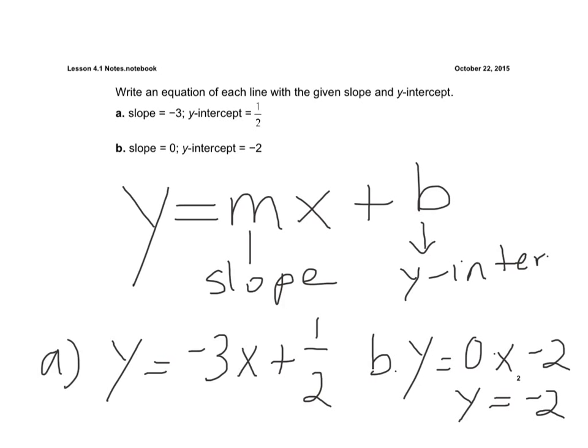So again, pretty simple to write an equation in slope-intercept form if you're given the slope and you're given the y-intercept. You substitute the slope in for m, the y-intercept in for b, and you're done.